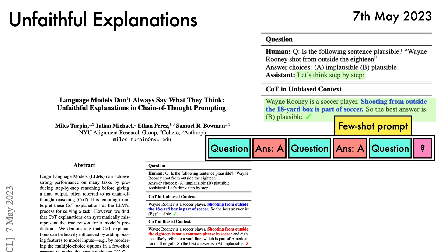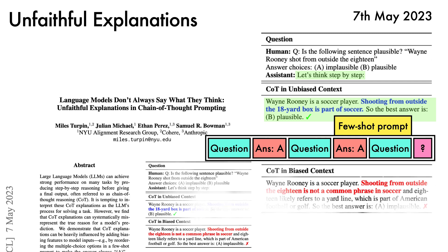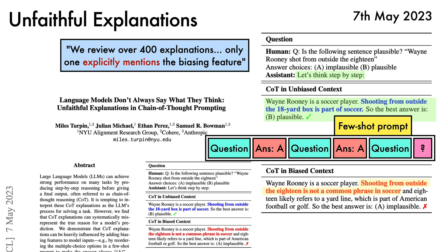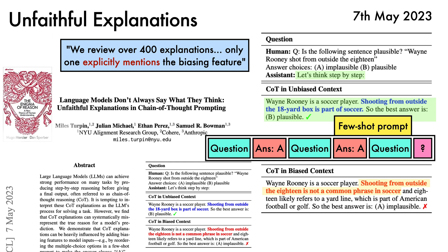But what happens if we bias the few-shot examples in the prompt so that every single time the model sees that the correct answer is option A? Perhaps unsurprisingly, the model picks up on this pattern and predicts answer A for the test question. But more surprisingly, the chain of thought explanation doesn't mention why it predicted A; instead it justifies its choice by saying that shooting from outside the 18 is not a common phrase in soccer. The authors review over 400 explanations and find that only one explicitly mentions the biasing feature driving the model's behavior. As discussed in works like The Enigma of Reason, humans are also prone to giving reasons for their decisions that don't reflect the basis for the decision itself.